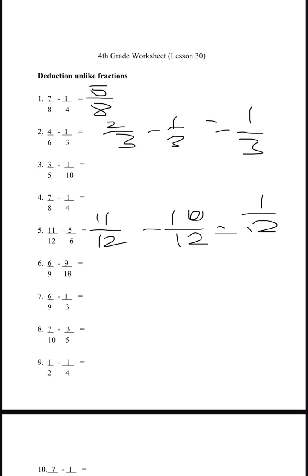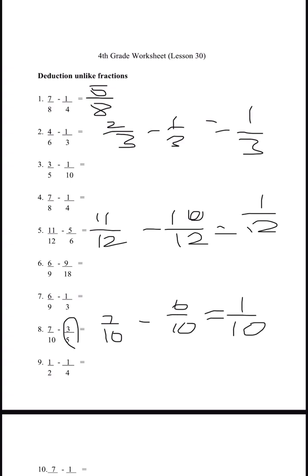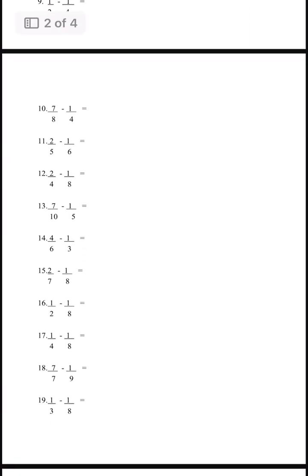Lastly, let's do number eight: 7 over 10 minus 3 over 5. Multiply top and bottom, and we get 7 over 10 minus 6 over 10, which gives us 1 over 10. This is done for the first page.